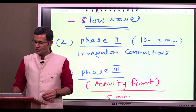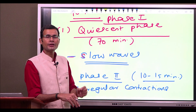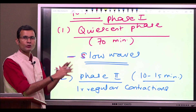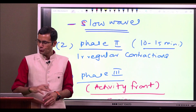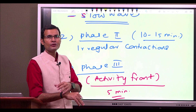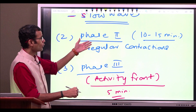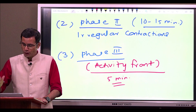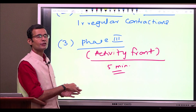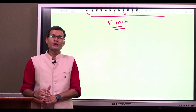To summarize the three phases: Phase one lasts 70 minutes with only electrical activity in the gut and no contractions — the quiet or quiescent phase. Phase two has irregular contractions for 10 to 15 minutes, where some slow waves are followed by contractions and some are not. Bile flow occurs at the peak of phase two. Phase three, the last five minutes, is the activity front with very regular contractions where each slow wave is followed by contraction.